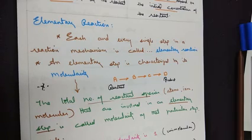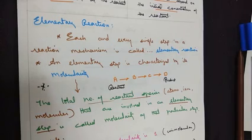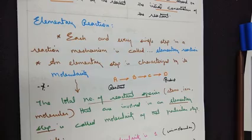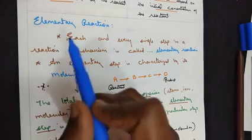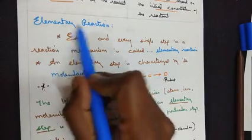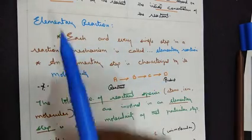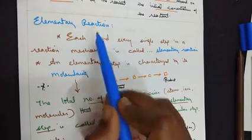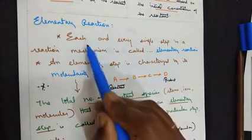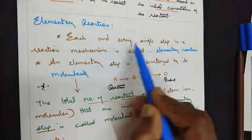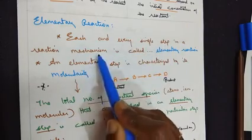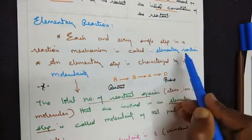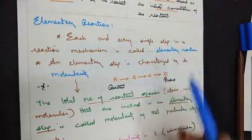Good wishes dear students. In today's class we will learn about a few more concepts involved in the chemical kinetics chapter. To start with, let's take elementary reaction. The definition for elementary reaction is: each and every single step in a reaction mechanism is called an elementary reaction.